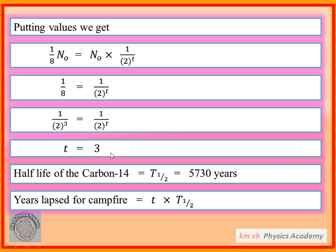t is equal to 3. Half life se 3 guzri hain aur yeh T₁/₂ kitna hai? 5,730 years. Toh yeh value put kar dete hain.